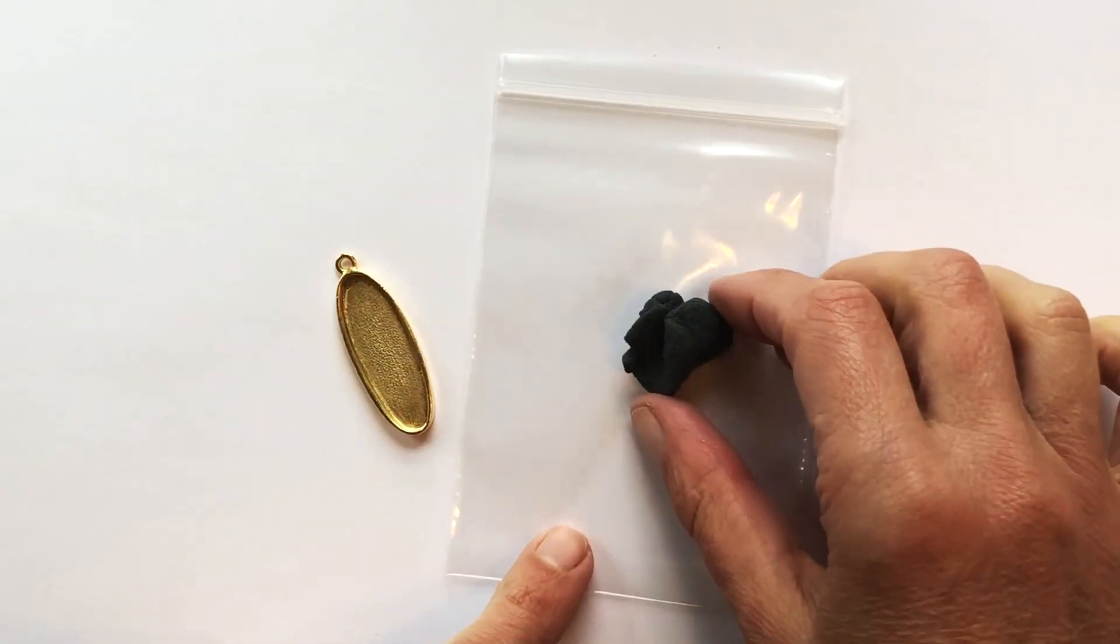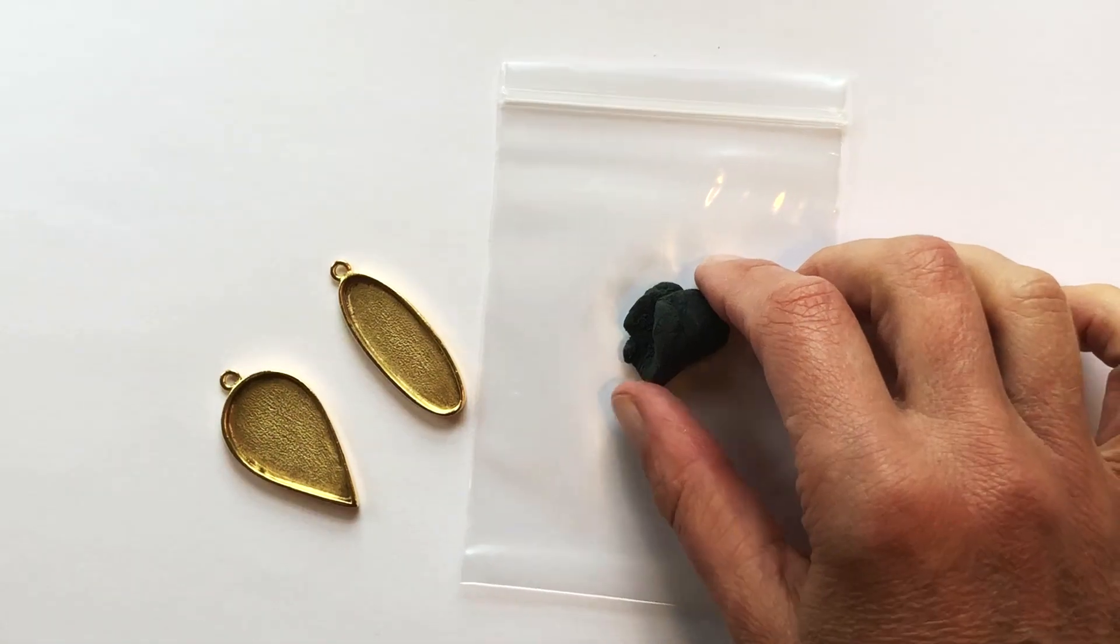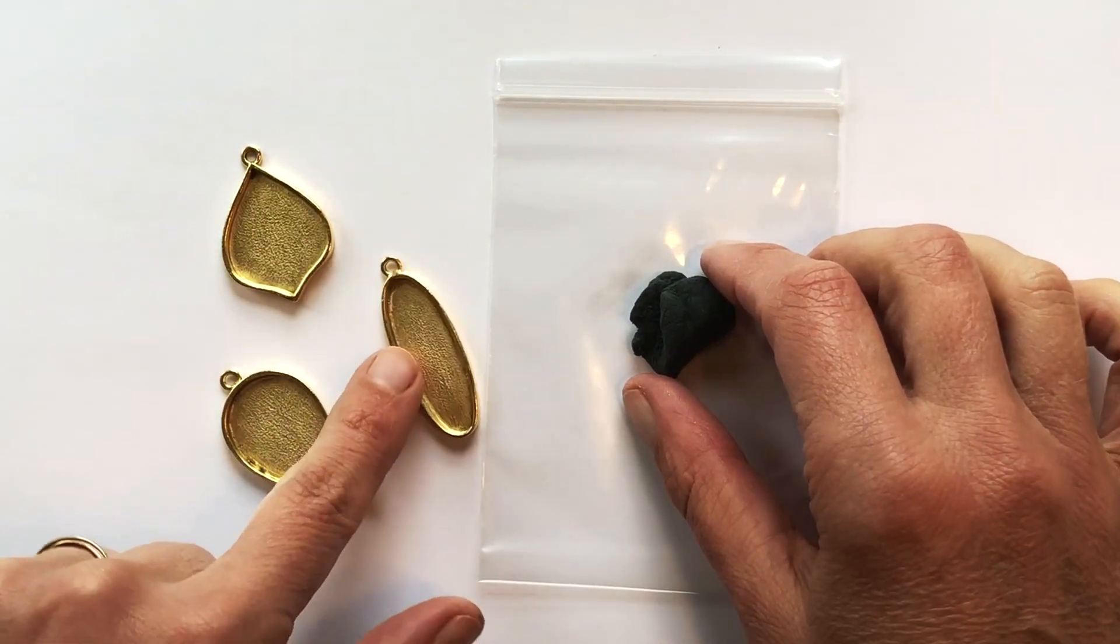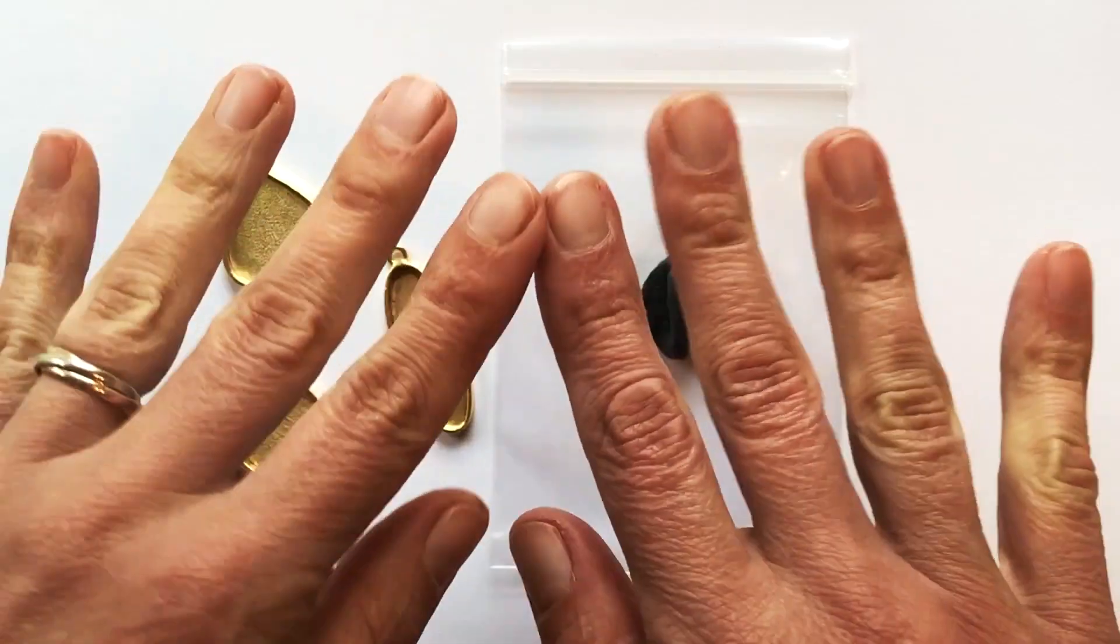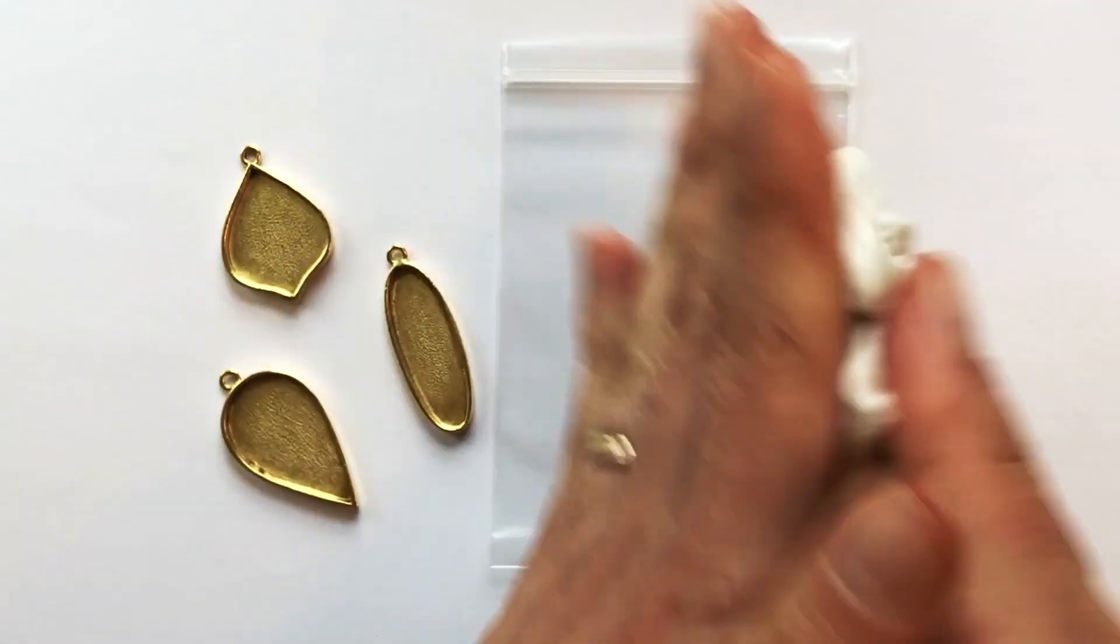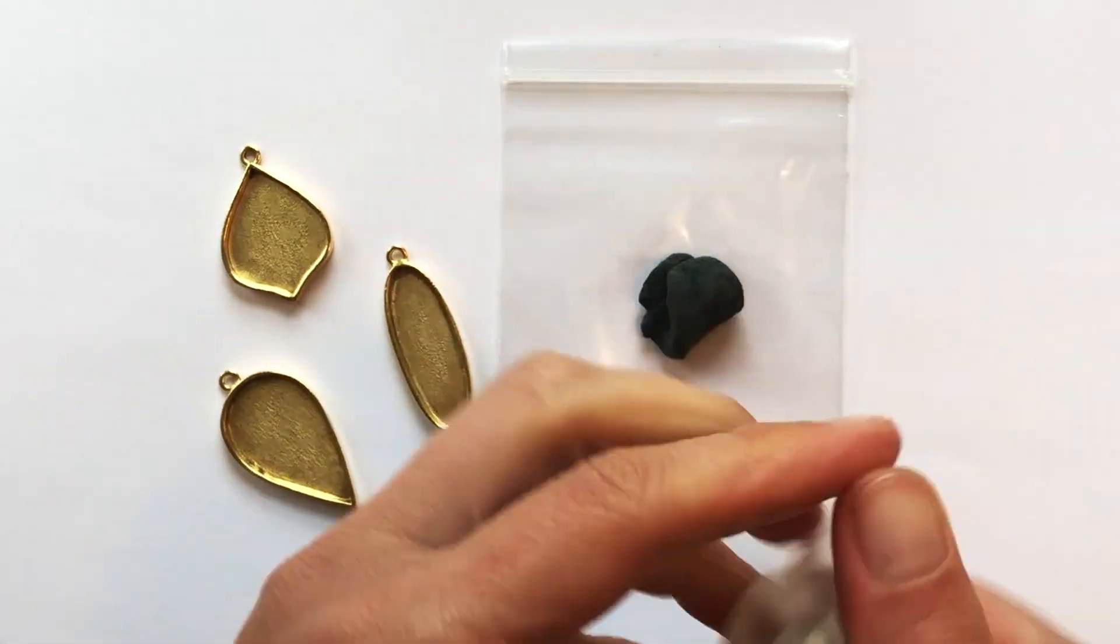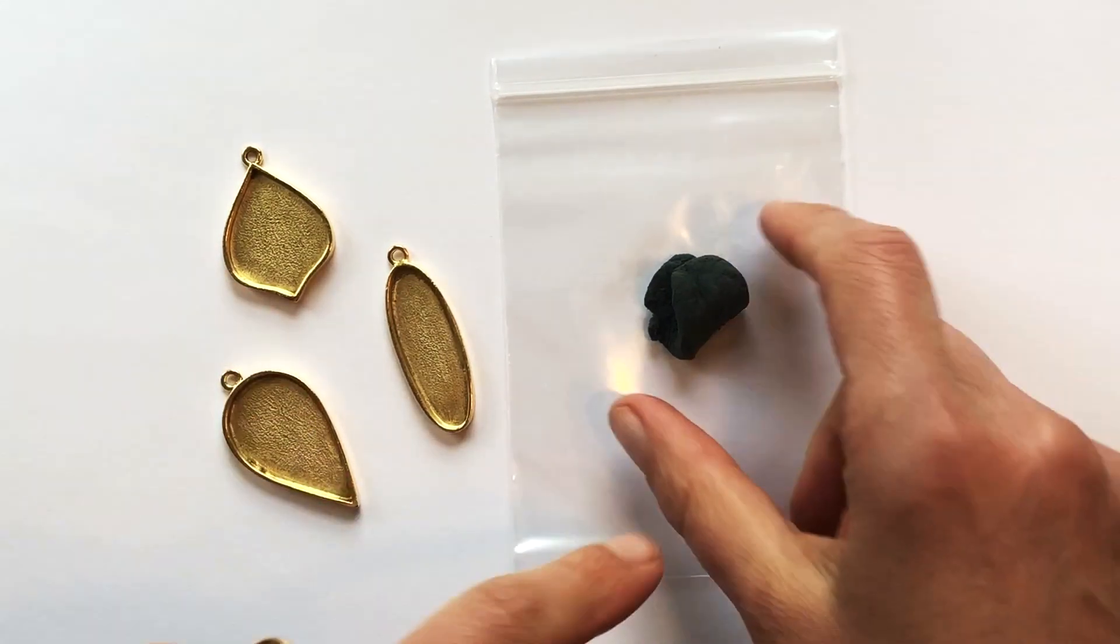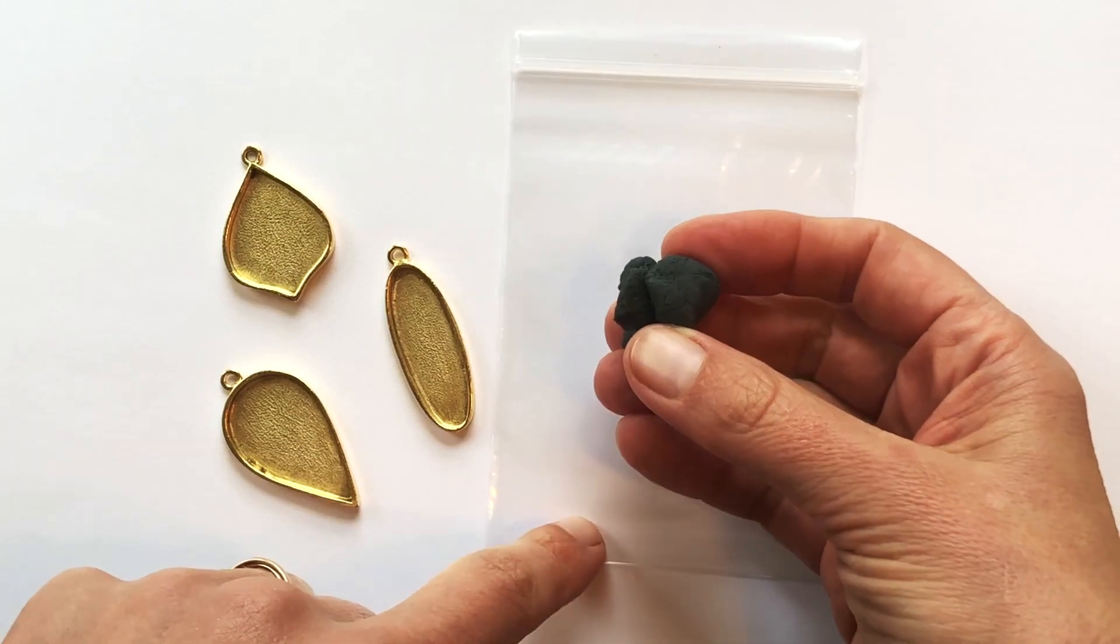Now that the clay is activated, we can start to put it into the various bezels that we want to use it in. Before I touch that clay too much, I still have some baby powder on my hands. So using a wet wipe, just wipe off that baby powder. If the clay is really sticky when you first start to work with it, you can just let it sit.